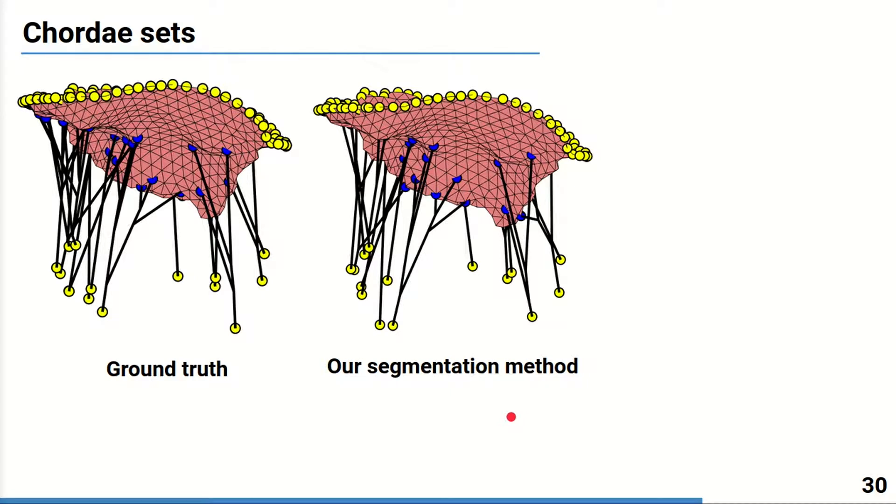For our test we have taken three chordae configurations: ground truth chordae, chordae obtained with our segmentation method, and the same chordae set but with enforced slack.